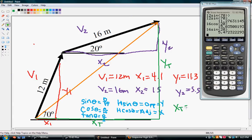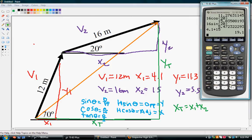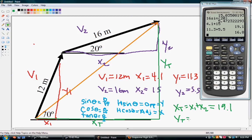And we find these by adding our x's together. So, x total is going to equal our x1 plus our x2. So, 4.1 plus 15 is 19.1. This is our x total. And our y total is going to be 11.3 plus 5.5. And we get 16.8. So, our y total equals y1 plus y2. And that is 16.8.